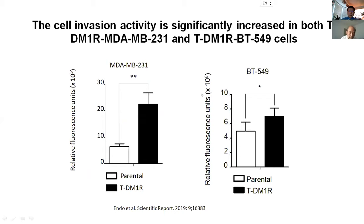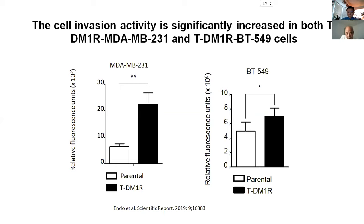Something still changed. When we compared cells being exposed to TDM1 after three months — named as resistant — even though growth is not inhibited, both cell lines show increased invasion activity. Very interesting. Furthermore, alpha-5 beta-1 integrin showed similar changes as compared with HER2-positive breast cancers.